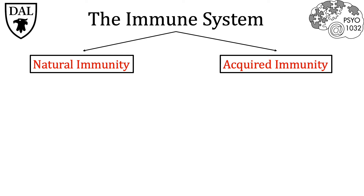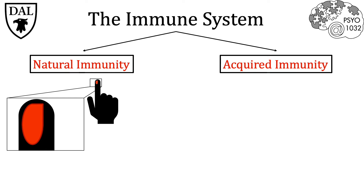Natural immunity is the first line of defense against foreign agents — that is, antigens. It's an inborn process for removing antigens from the body, and this response is usually immediate as well as nonspecific, in that it will attack any antigen present. A quick example would be cutting your finger. When you cut your finger, your finger becomes very inflamed and blood vessels contract and dilate to increase the flow of blood to that area, where damaged cells release chemicals to signal for specialized immune cells to come and destroy invading microorganisms.